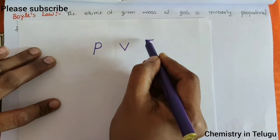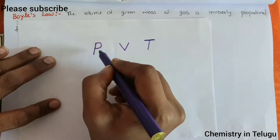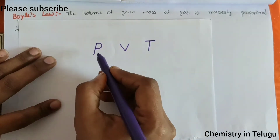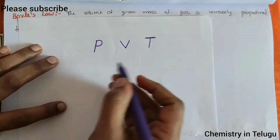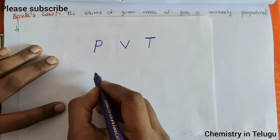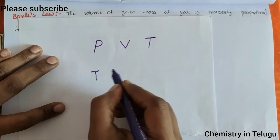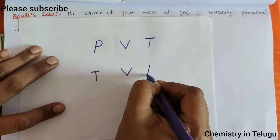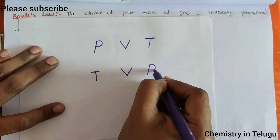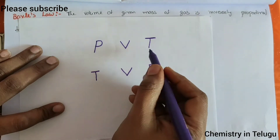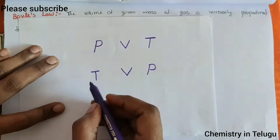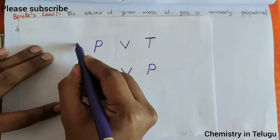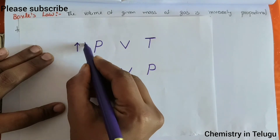And you will get the same formula — Pressure, Volume, and Temperature. Pressure and Volume and Temperature. This reverse is T, V, P. So P, V, T and D, V, P — you will get the opposite signatures, opposite directions.